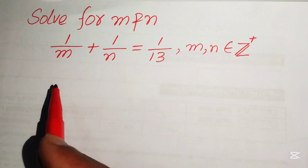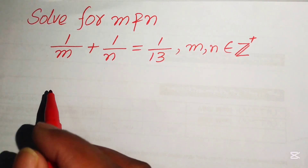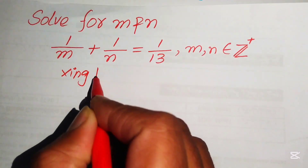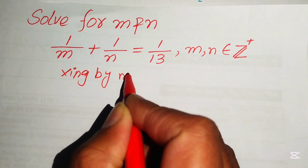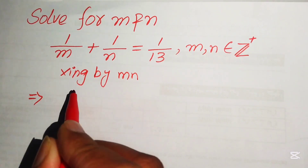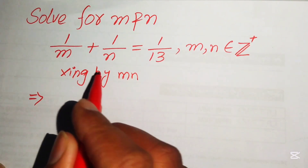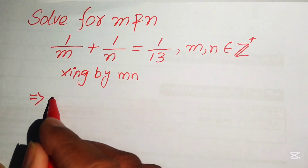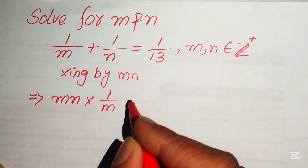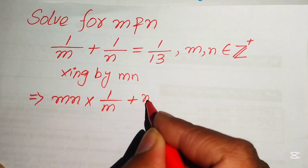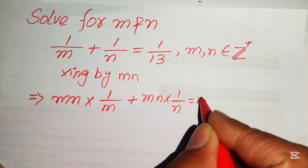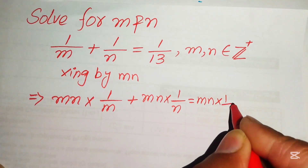The very first step is to multiply both sides by mn. So we multiply mn on each of these terms, written as mn times 1 over m, plus mn times 1 over n, equals mn times 1 over 13.